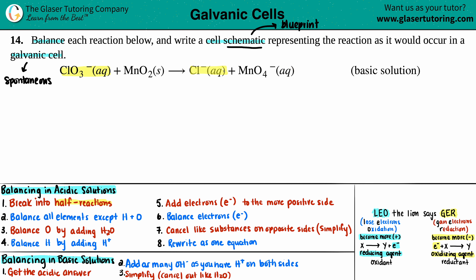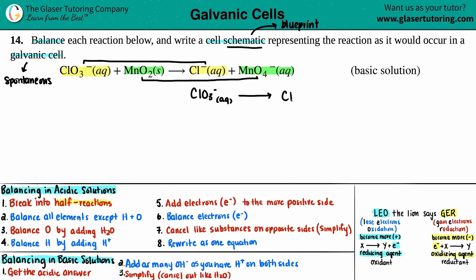Chlorine goes with chlorine, and on the flip side, MnO₂ (s) pairs with MnO₄⁻ (aq). It does not matter which one you write on the top or bottom. So we have half-reaction one: ClO₃⁻ (aq) → Cl⁻ (aq), and half-reaction two: MnO₂ (s) → MnO₄⁻ (aq). Step one is done.